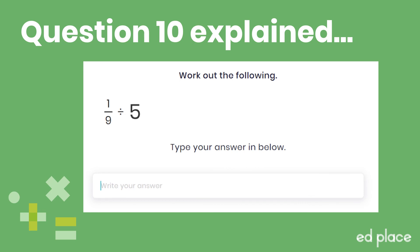Now let's have a look at the last question: one-ninth divided by five. K — keep one-ninth the same; F — flip five ones to make it one-fifth; C — change divide to multiply. One-ninth times one-fifth equals one forty-fifth. We can't simplify that, so one forty-fifth is the answer. Well done if you got those questions correct!